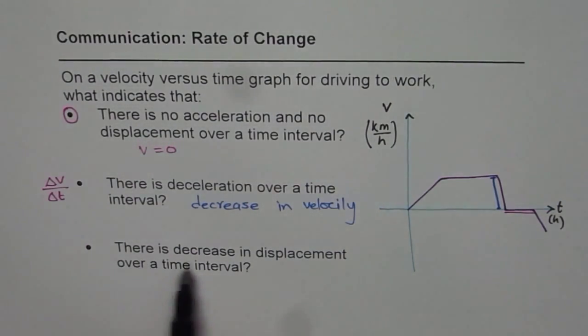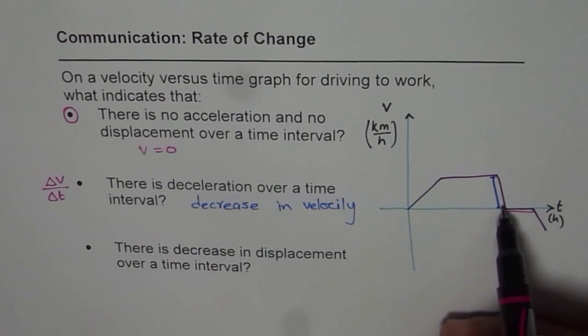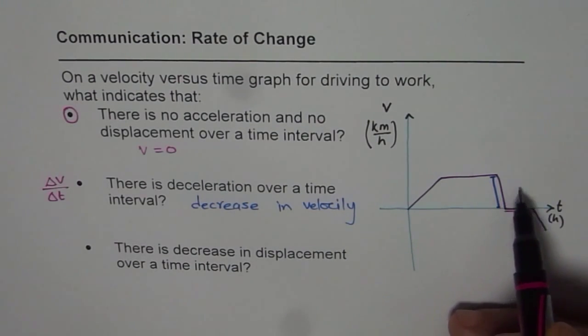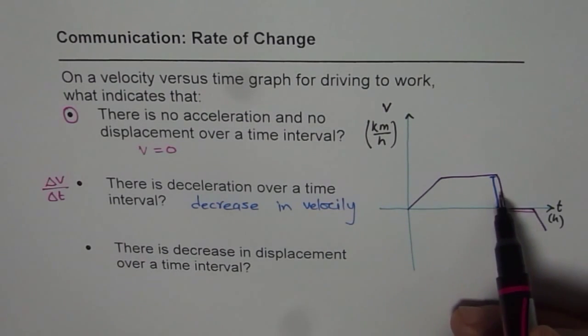The last part is: there is decrease in displacement. Well, in this case, there is decrease in velocity, but still we are moving away from the source. Distance is increasing or the displacement is increasing. The position is farther away from the original.